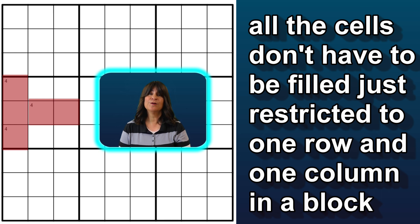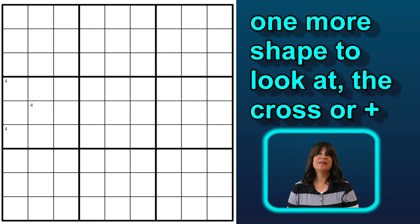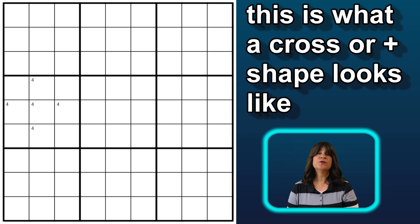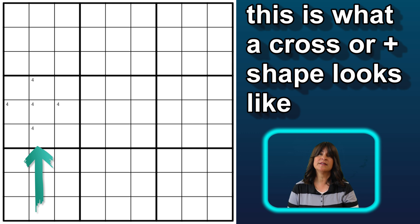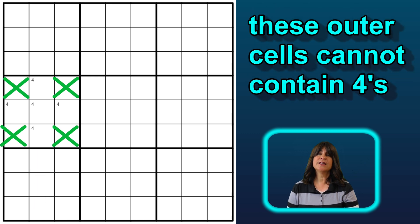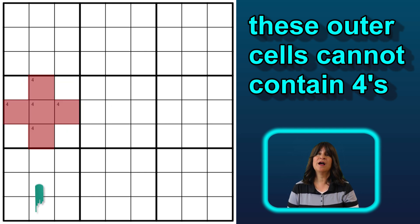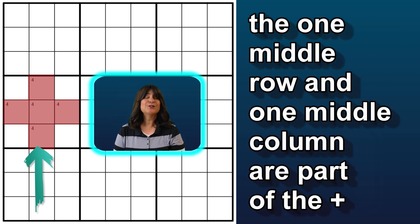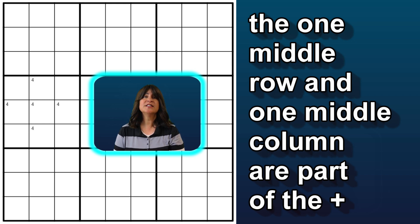That's the rule. So we have L-shapes and T-shapes, and then there's one more shape — a plus sign or a cross shape. Here you can see the middle row and the middle column of block 4 has 4s in it. The 4 outer cells cannot contain 4s. Remember, the pattern is that the number has to be restricted to exactly one row and one column. The outer cells that don't contain the 4 make up the empty rectangle, but the main part of this pattern is the one row and one column that contains the number.